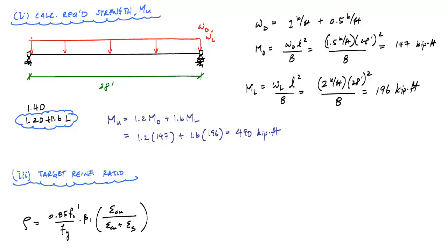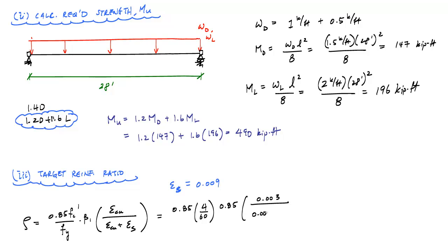Next, we establish a target reinforcement ratio. We're going to target a beam with a steel strain at ultimate of εt = 0.009 — a pretty ductile beam. Substituting into the reinforcement ratio relationship: ρ = 0.85 × (4/60) × 0.85 × 0.003 / (0.003 + 0.009). This gives a target reinforcement ratio of 0.012, or about 1.2%.